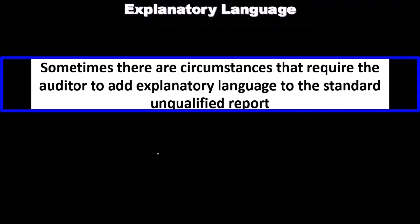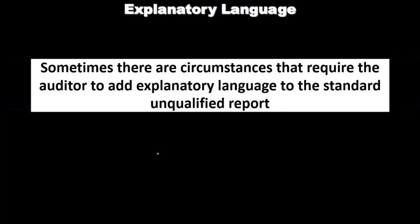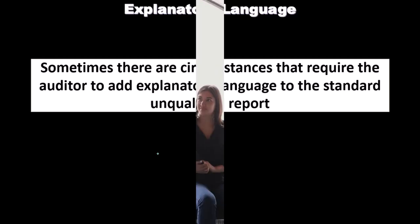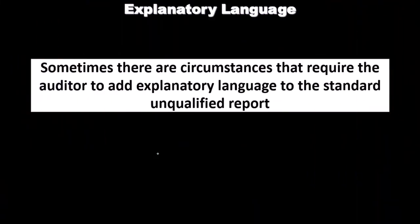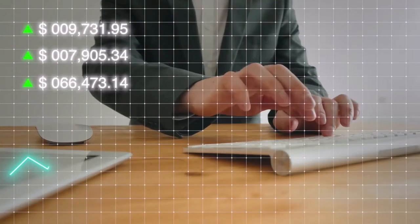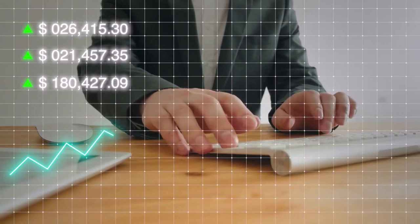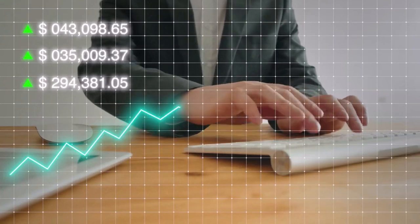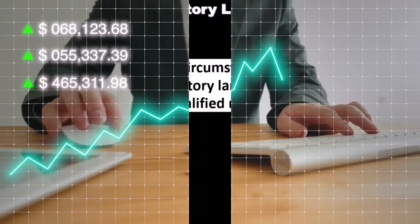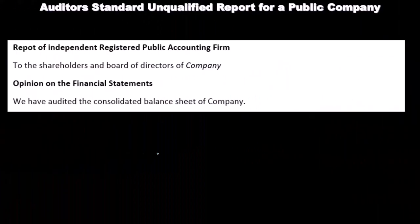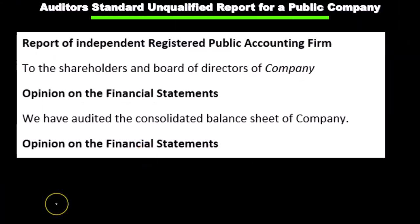Sometimes there are circumstances that require the auditor to add explanatory language to the standard unqualified report. In other words, we might have an unqualified report with no qualifications, but still want to add some type of language to the standard report without making it a different type, such as a qualified report. Of course, if there are qualifications, we would have to change the report from unqualified to some other type, such as a qualified report.